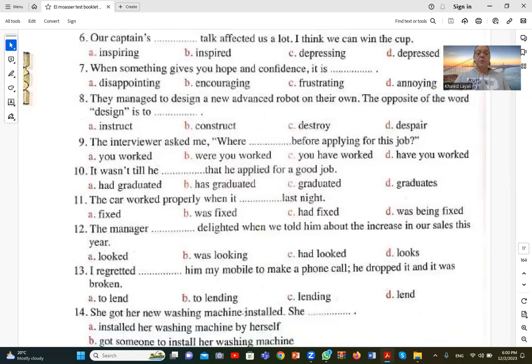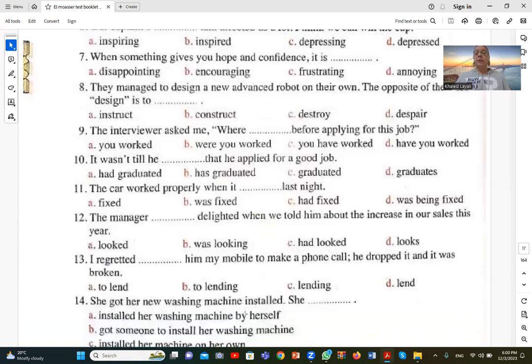Number twelve. The manager delighted when we told him about the increase in our sales this year. اللي حصل للمدير لما قلنا له about the sales increase. The manager looked delighted. بدأ عليه إنه سعيد. Looked is in the past because of when we told him. There's consistency in tenses. Delighted is an adjective meaning happy. He looked delighted, D is correct.